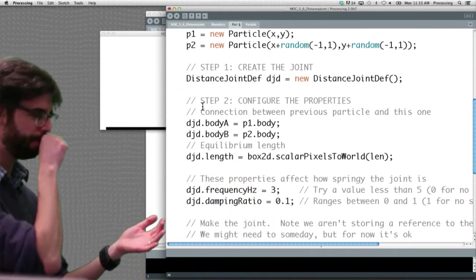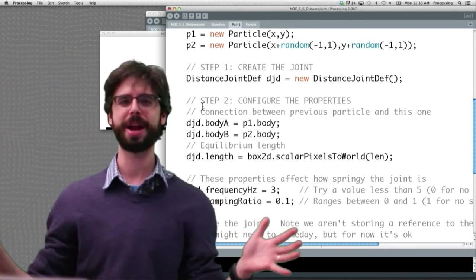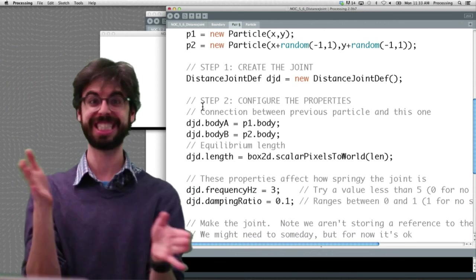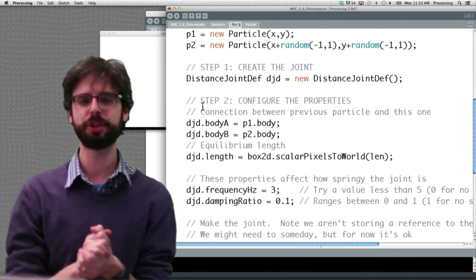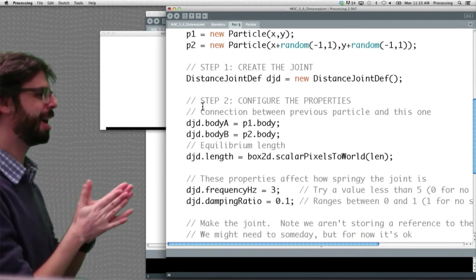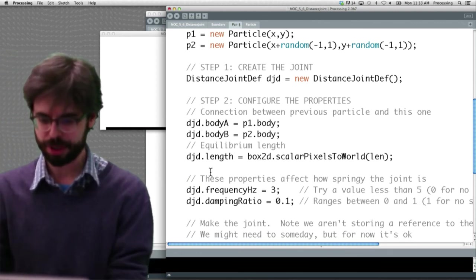And you can see we're choosing three, we're choosing point one. Try different values. Here's a great exercise. Build little slider controls that allow you to set what the values of those joints are before you create them. And okay, so that's step two.